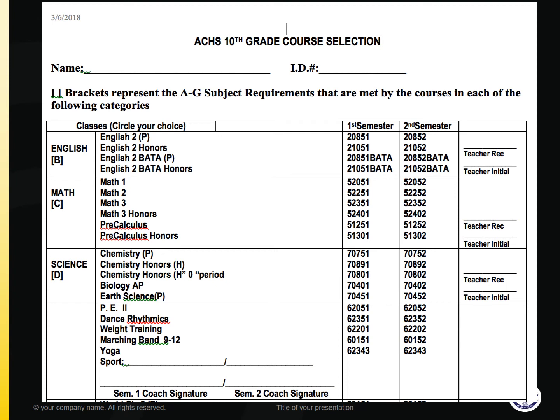Math is the next category and there are several options. You will make a selection based on your current class. For example, if you are enrolled in Math 1 currently, you move to Math 2. If enrolled in Math 2, you move to Math 3. If Math 2H, you would move to Math 3H. Math 3 to Pre-Calc and Math 3H to Pre-Calc Honors. Your math teacher will assist you in making the recommendation.